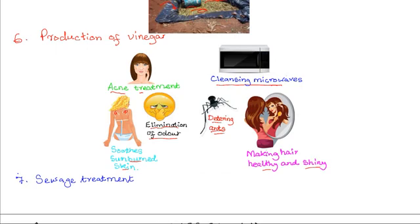Lastly, there is sewage treatment. Anaerobic bacteria and fungi are used to break down organic matter in sewage and industrial effluent to reduce harmful effects. This sewage material is not released directly into water bodies, but is passed through a sewage treatment plant in which anaerobic bacteria and fungi remove the harmful organic matter, so that whatever is released is less harmful and there is less harm done to aquatic organisms.